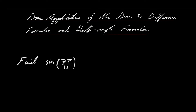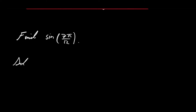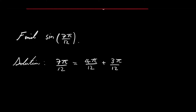Now 7π over 12 is not one of our special angles, but we can relate 7π over 12 to the special angles. The way we can do this is by writing it as a sum of special angles. Note that 7π over 12 is equal to 4π over 12 plus 3π over 12, and these fractions simplify to π over 3 plus π over 4. And π over 3 and π over 4 are special angles.